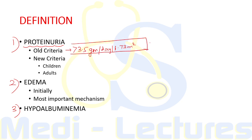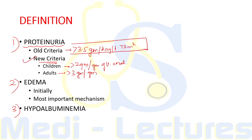There is also a new criteria for defining nephrotic syndrome proteinuria. In children, proteinuria more than 2 grams per gram of urine creatinine, and in adults, proteinuria more than 3 grams per gram of urine creatinine. This is the new criteria for nephrotic syndrome.